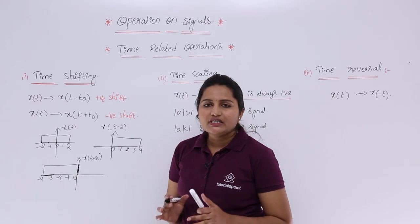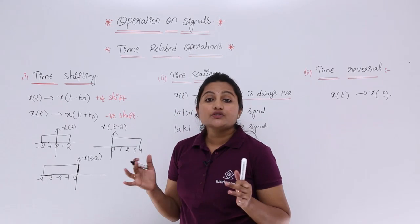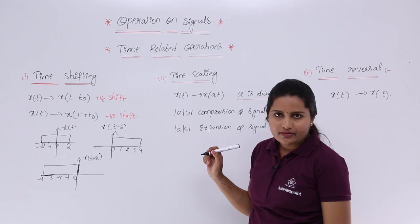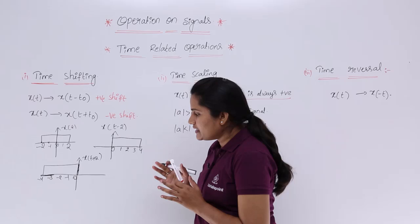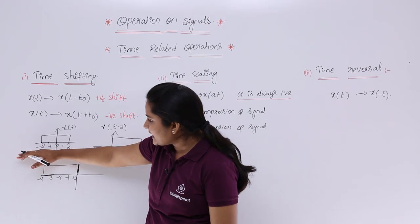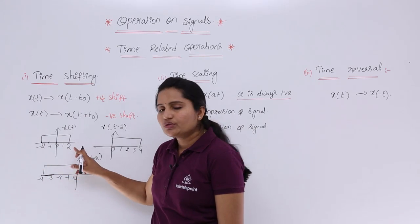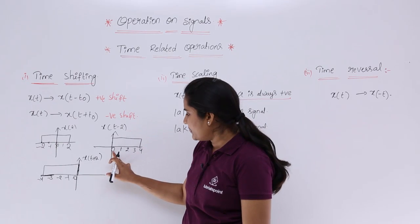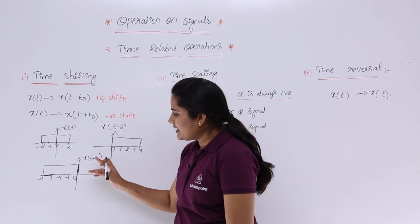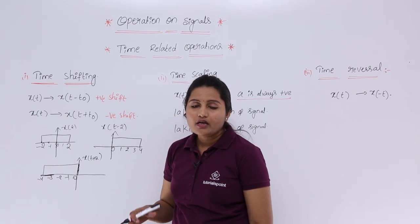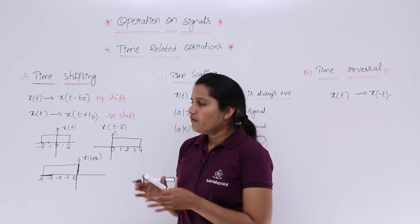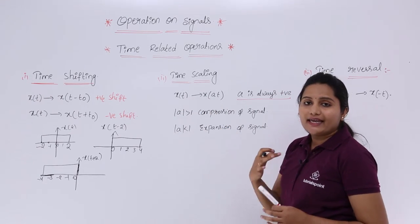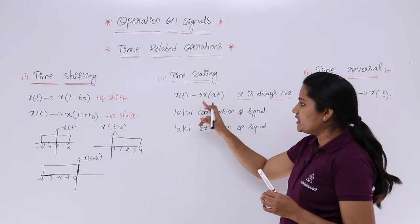Whatever we have done is we just shifted the time period — we are not changing the time period. There is a key difference between scaling and shifting. In shifting, the time period of x(t) from minus 2 to 2 is 4; the right-shifted and left-shifted versions also have the same time period of 4. We are just shifting the position, not changing the duration. Whereas in time scaling, we are going to change the time period as well.